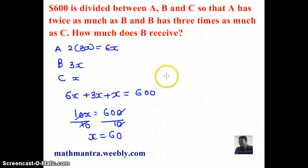So, we want to find out how much B received. Now, B has got 3X which means 3 times 60 because X is 60 and that's $180.